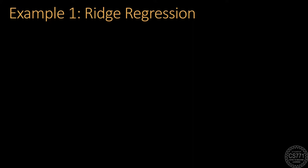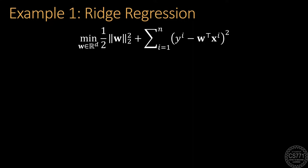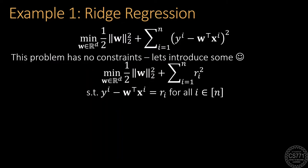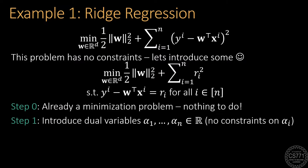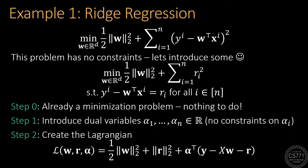The first example is the so-called ridge regression problem, which seeks to learn a linear model. At first glance, there seem to be no constraints. The trick is to artificially introduce constraints by introducing n new primal variables Ri to denote the residual error in the n data points, giving us n equality constraints, one per data point. The problem is already a minimization problem, so nothing to do there. We introduce n dual variables — with no constraints on them since they correspond to equality constraints — and then create the Lagrangian.